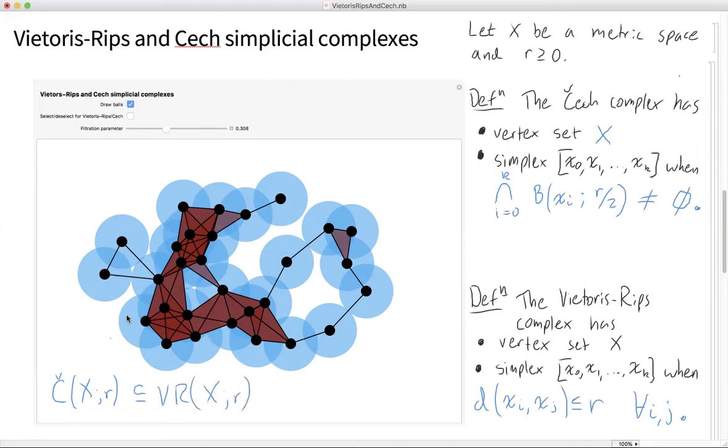This probably makes sense to you based on this picture. In the Čech complex we have, so these two have the same edge sets. So these two have the same edge sets in the Euclidean space.